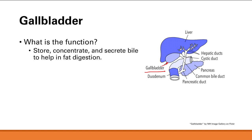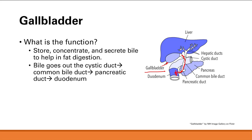The bile will go out of the gallbladder into the cystic duct, and then into the common bile duct, and then through the pancreatic duct into the duodenum. That's how it works.